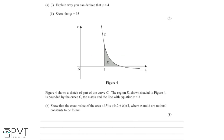We're now going to work through part B. Figure 4 shows a sketch of part of curve C. The region R, shown shaded in figure 4, is bounded by the curve, the x-axis, and the line with equation x equals 3. Part B says to show that the exact value of the area is a times the natural log of 2, plus b times the natural log of 3, where a and b are rational constants to be found. This is worth 8 marks.